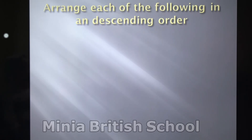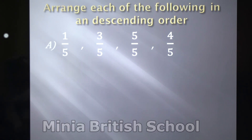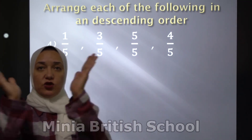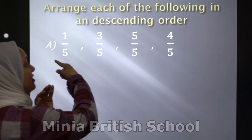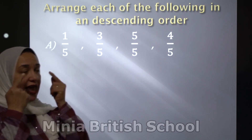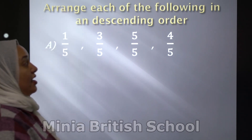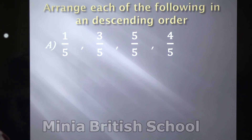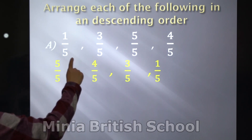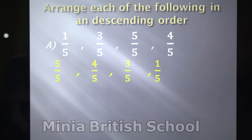Arrange the following in descending order. You have 1 over 5, 3 over 5, 5 over 5, and 4 over 5. Don't forget — descending order goes from the greatest to the smallest. All the denominators are the same, so look at the numerators. Which one is the greatest? Yes, it's 5 over 5 — it's a whole number. After that, 4 over 5; after that, 3 over 5; and the lowest one is 1 over 5.